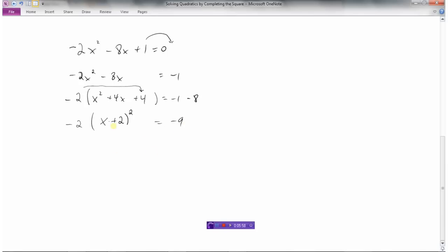And now I can isolate my square. So I'll start by dividing by negative 2. And a negative divided by negative is a positive. So we'll leave that as 9 over 2. And now we can square root both sides.